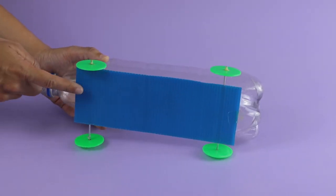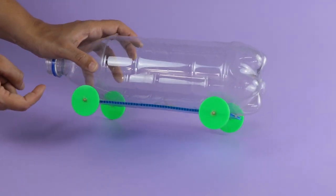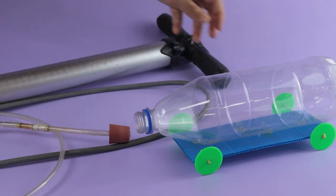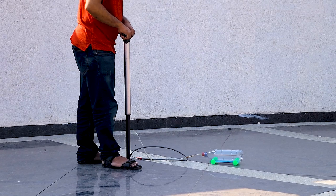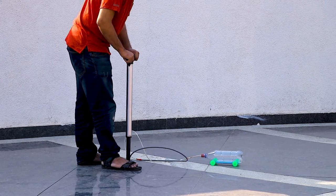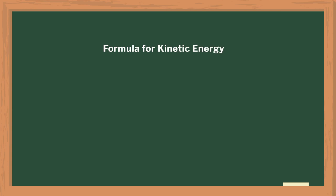Take the rectangular corrugated sheet and attach a wheel with the help of a spoke. Take an empty plastic bottle and tape it to the corrugated sheet. Fix the rubber cork on the mouth of the bottle. Now start to pump air into the bottle. The rubber cork should eject and the bottle should shoot forward like a jet. The formula for kinetic energy is half mv squared.